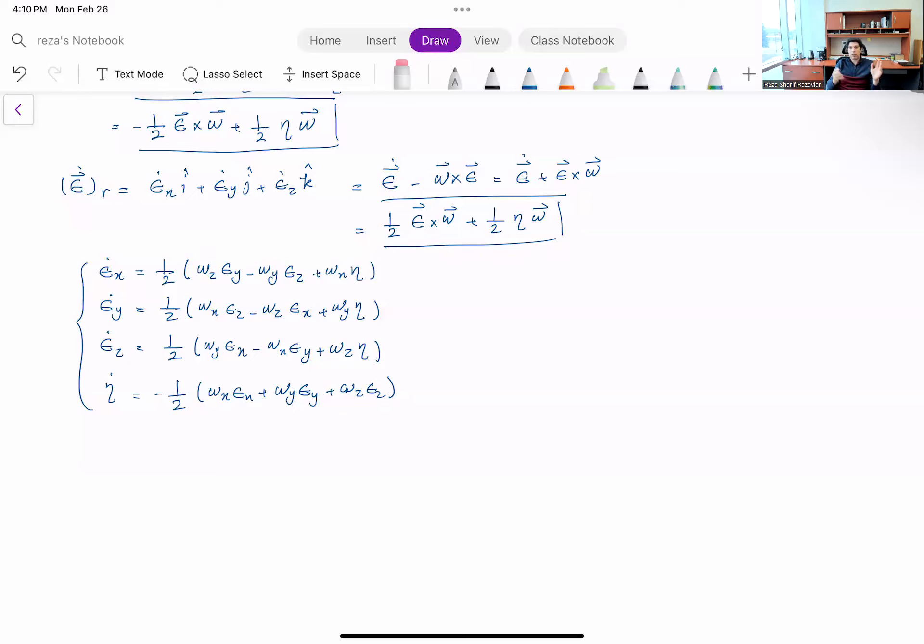So when at the end of the day, at the end of some motion or during the movement, you calculate your epsilon x, y, z and eta, you know how your body is oriented in space. All right, so that is all from the kinematic side. We looked at positions, we looked at velocities, and that is good enough for us to be able to write equations of motion and describe the dynamics of rigid bodies in 3D space.